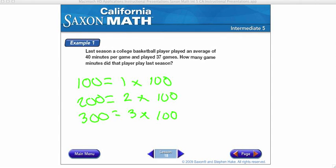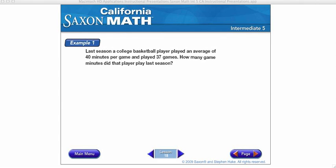So let's talk about how we can use that when we talk about multiplying. Here we have example one. Last season, a college basketball player played an average of 40 minutes per game and played 37 games. How many game minutes did that player play last season? So we have 40 minutes a game times 37 games.